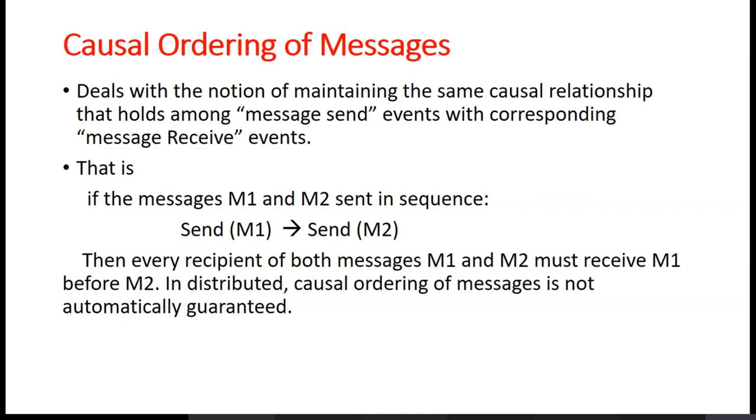If you say send of M1 happened before send of M2, then every recipient of both the messages M1 and M2 must receive it in order M1 and M2. That is, must receive M1 before M2. So in this distributed environment, causal ordering of messages is not done automatically. So we need to employ some protocols to ensure this causal ordering of message.